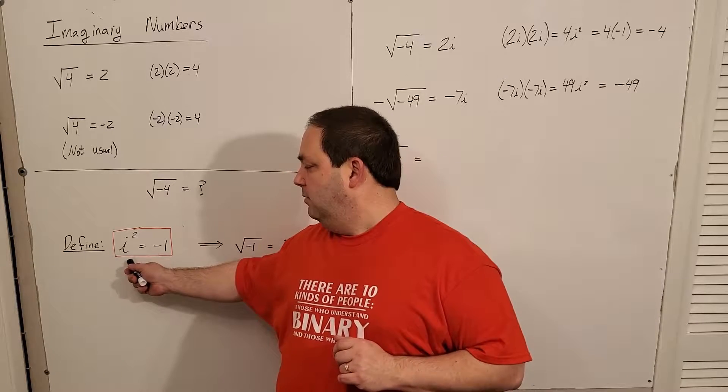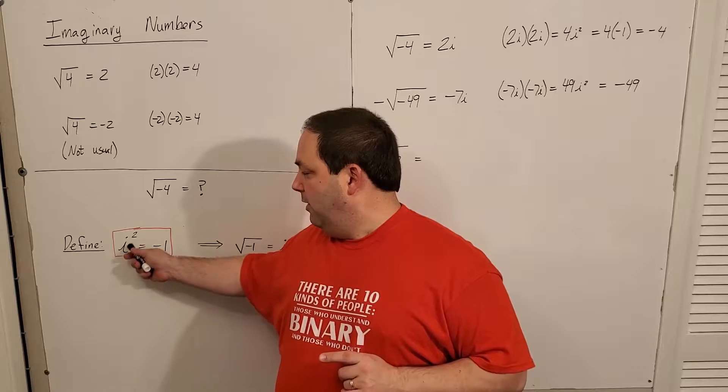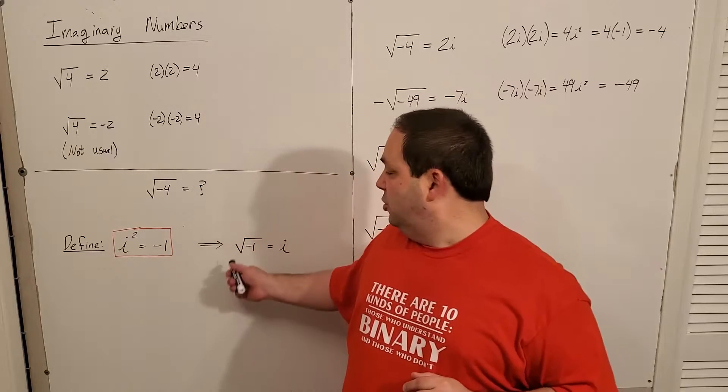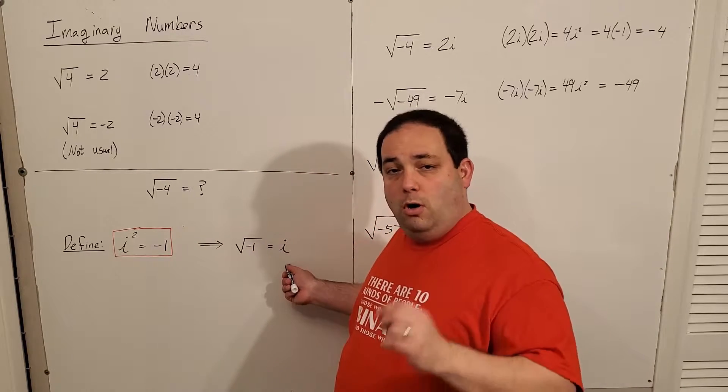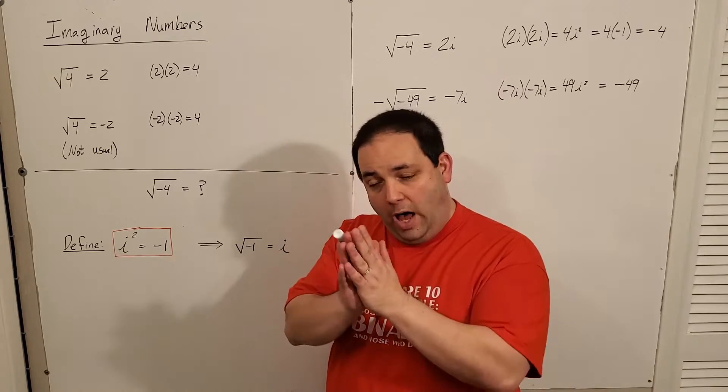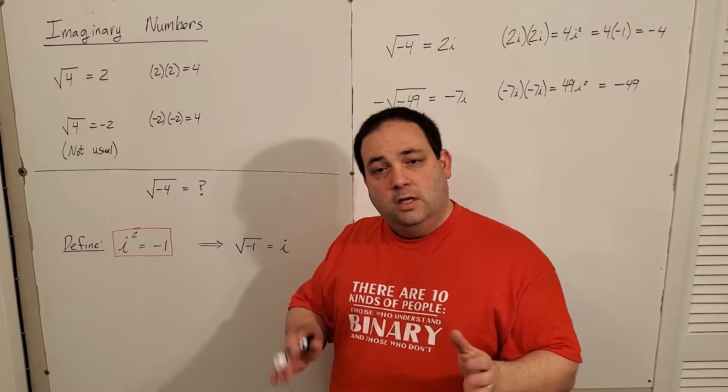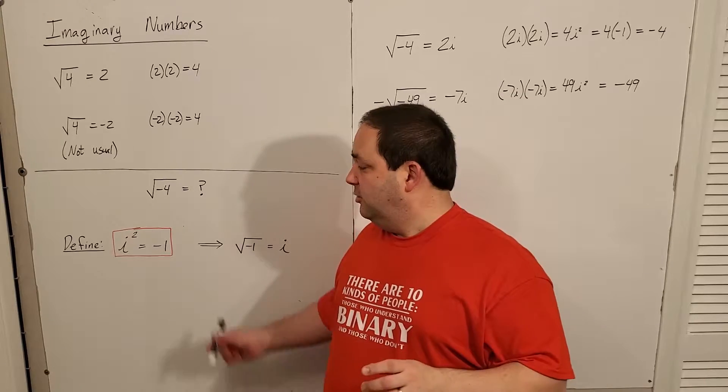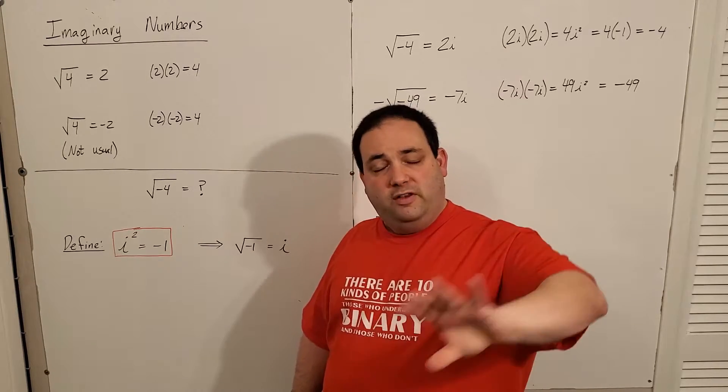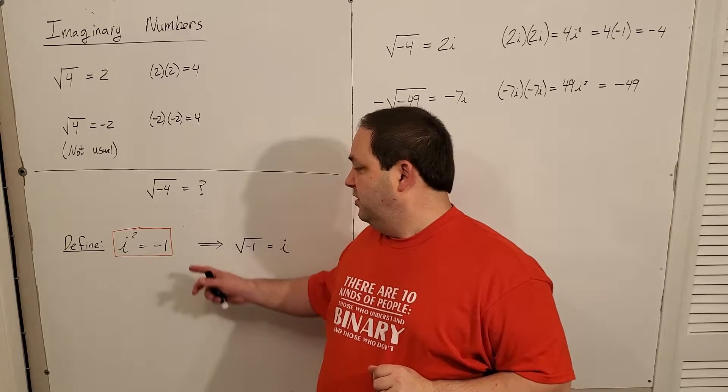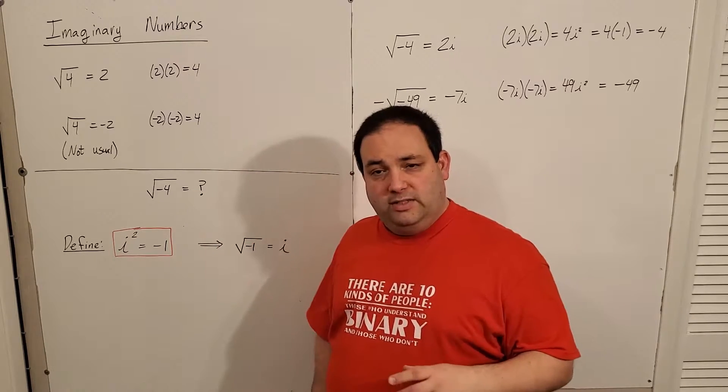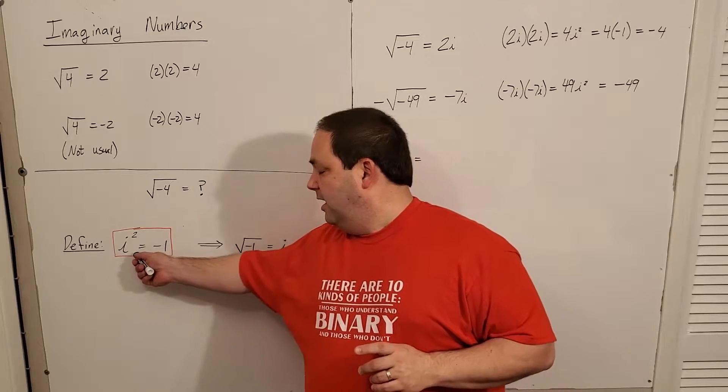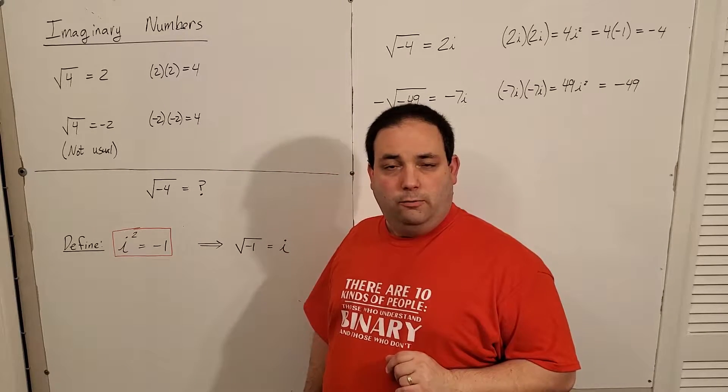Let's define what i is. Define i to be the value that when you square it gives negative one. As a result, the square root of negative one would then be what we're calling i. So i is just whatever value it needs to be such that i times i gives negative one, and that creates a base unit for this brand new imaginary number system. This i handles the negative portion of the square root.